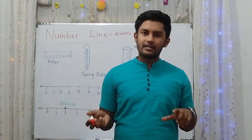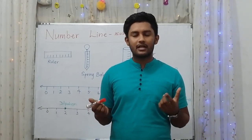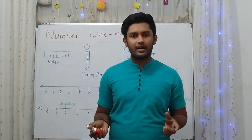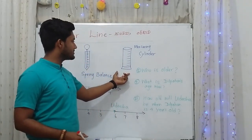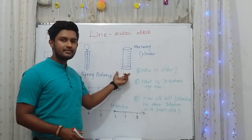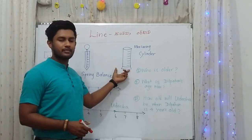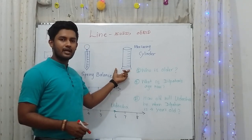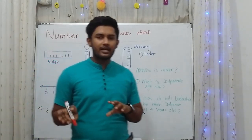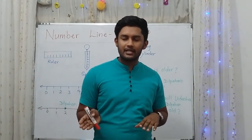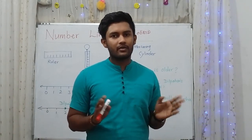When you go to the laboratory, there is the measuring cylinder. Some cylinders have numbers marked according to a specific order. This measuring cylinder is also a good example of a number line — that means a number line is numbers arranged according to a specific order.